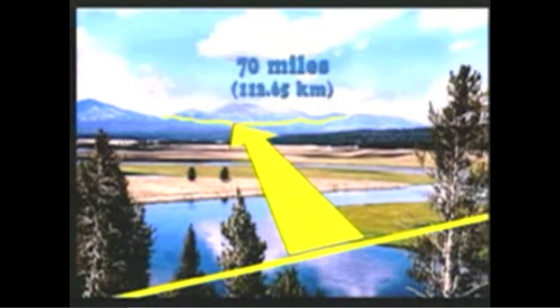The lines that run east and west are called parallels of latitude. In the real world, these imaginary lines are always the same distance from one another, about 70 miles, or roughly 113 kilometers.